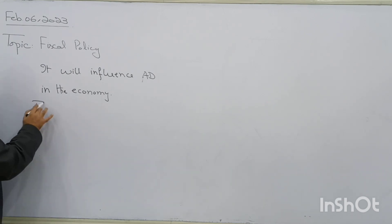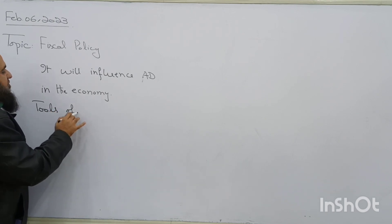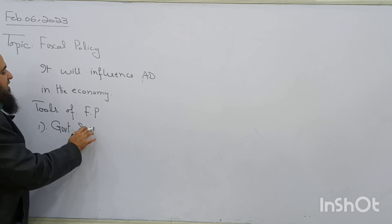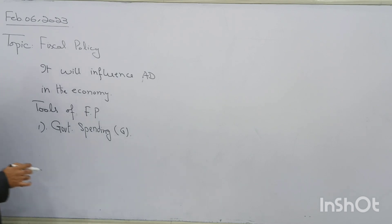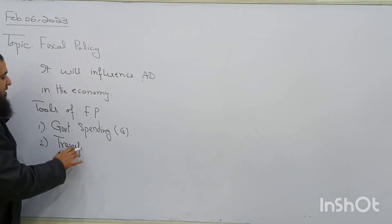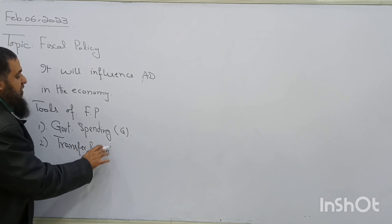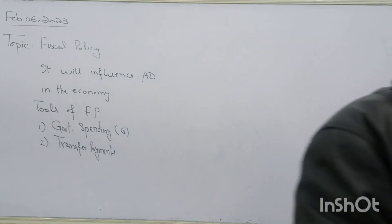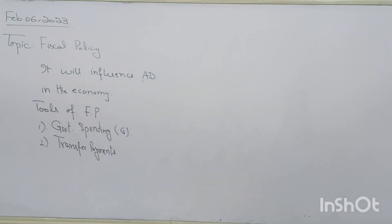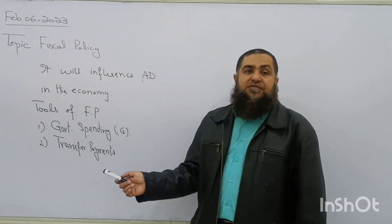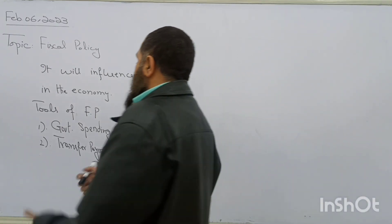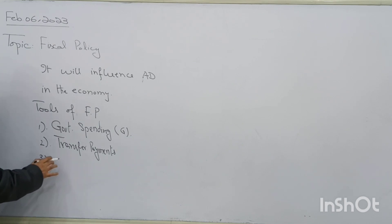The tools of fiscal policy are: first, government spending — such as development expenditures that create employment opportunities. Second, transfer payments, which are paid to vulnerable groups such as unemployment benefits, child care benefits, and pensions. These are not government purchases; they are simply transfer of funds from one sector to another, with no corresponding output produced against these payments. Third, taxes — both direct and indirect taxes are used by the government.